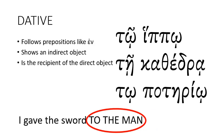The dative case is used after some prepositions like 'en'. The dative case most often shows an indirect object — something that is the recipient of the direct object. In the sentence 'I gave the sword to the man': what did I give? I gave the sword — that's the direct object. 'To the man' is who I gave the sword to — it's the indirect object. The marker for the dative case is iota.